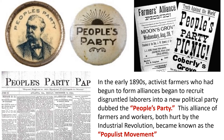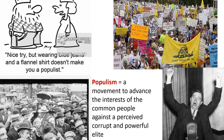In the early 1890s, activist farmers who had begun to form alliances recruited disgruntled laborers into a new political party dubbed the People's Party. Farmers and workers — the real people of America — formed this alliance, both groups hurt by the Industrial Revolution, and it became known as the Populist Movement. The Populist Movement is any movement to advance the interest of the common people against a perceived corrupt and powerful elite. In recent years, we've had the Tea Party and Donald Trump's candidacy as reflections of American Populist sentiment.